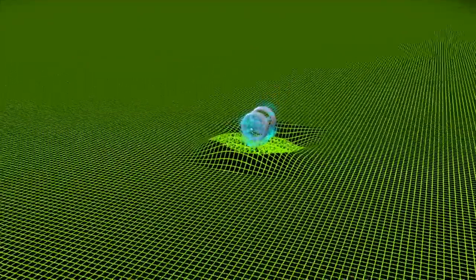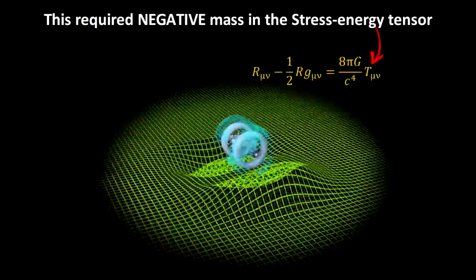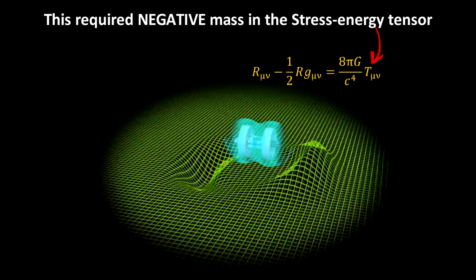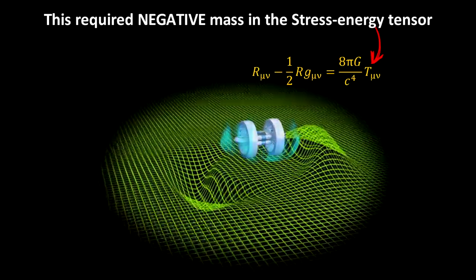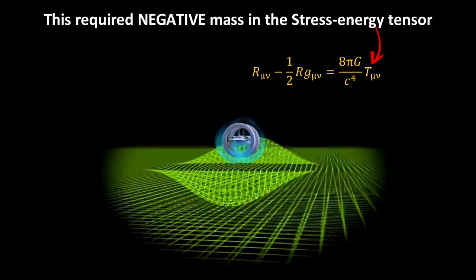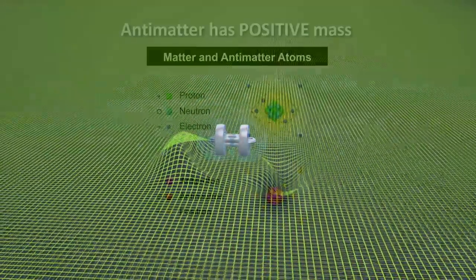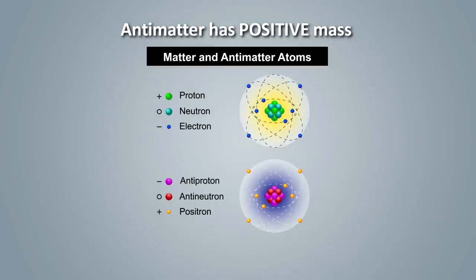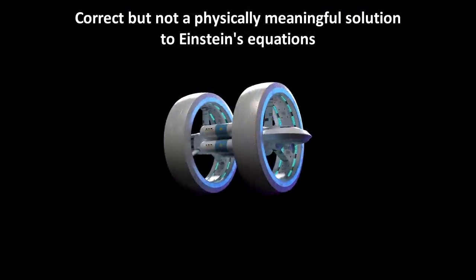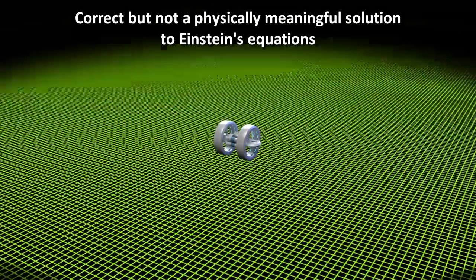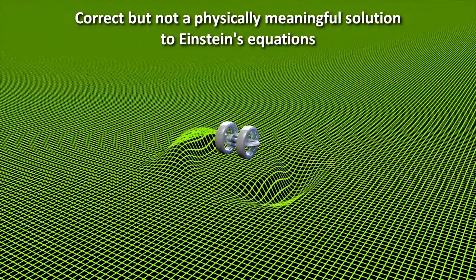So Alcubierre found a solution that could carry real passengers in this stationary bubble if the space-time around it was shaped like this. The problem is, the solution to the curvature required negative mass or negative energy in the stress-energy portion of the equation. This solution is mathematically consistent, but negative mass is not known to exist. Note that negative mass is not the same as antimatter. Antimatter is like regular matter, but with opposite charge. It has positive mass. So while Alcubierre's solution works mathematically, it is not a physically meaningful solution.